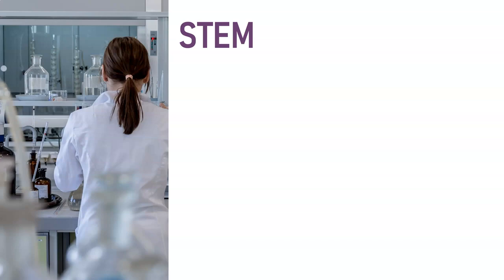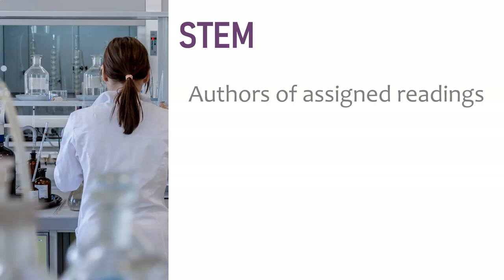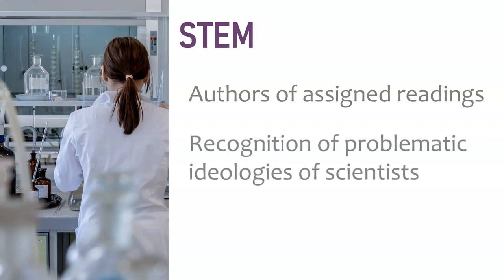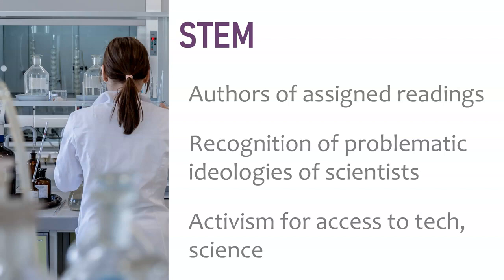In STEM, it's easy to think you can't spotlight queer and trans people of color, but think about who is writing your assigned readings and who's being left out. There are scientists who've done good work but hold problematic ideologies. Scientific racism is absolutely a thing to address with students. You can also discuss activism around access — accessibility for people with disabilities, class-related issues like getting tech, science, and medicine to lower-income people, and global equity around things like COVID vaccines.